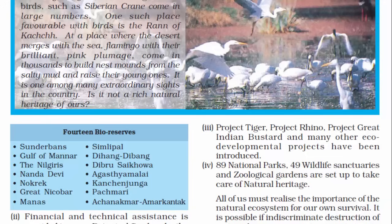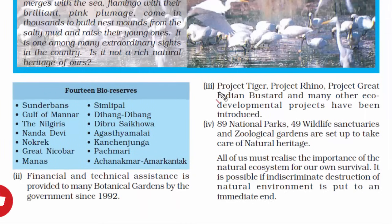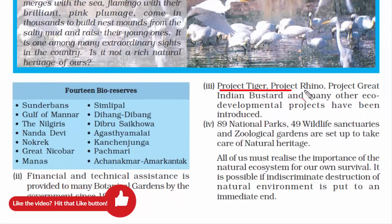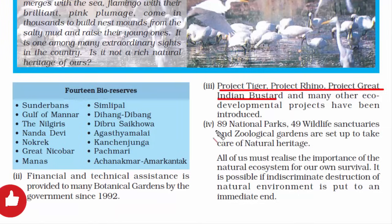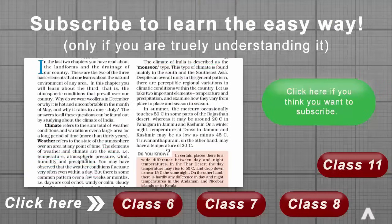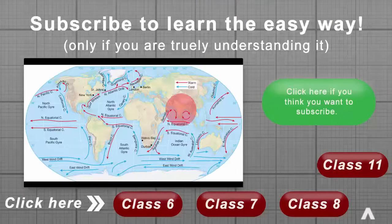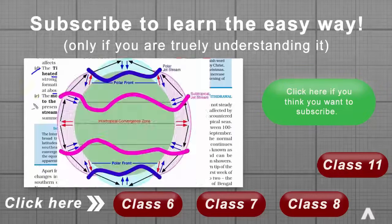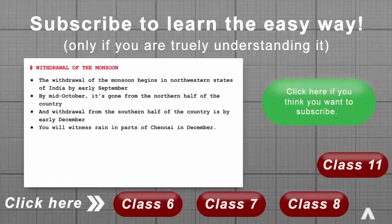The government of India has set up projects such as Project Tiger, Project Rhino, and Project Great Indian Bustard to protect these animals. India also has 89 national parks, 49 wildlife sanctuaries, and zoological gardens that take care of our natural heritage. With this, we have come to the end of this chapter. If you enjoyed this video, please like and comment below.